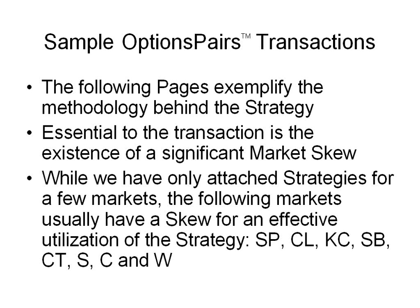A sample options pairs transaction — the following pages exemplify the methodology behind the strategy. Essential to the transaction is the existence of a significant market skew. If we had implied volatility running across the board at the same level, thereby having no skew, this strategy would not be worthwhile. We need a market skew to take advantage of the benefits the market provides. The following markets usually have a skew for effective utilization of the strategy: the S&P, crude, coffee, sugar, cotton, soybeans, corn, and wheat. There are other markets that provide it as well, but the liquidity in those markets is not as good, and therefore we don't recommend them.